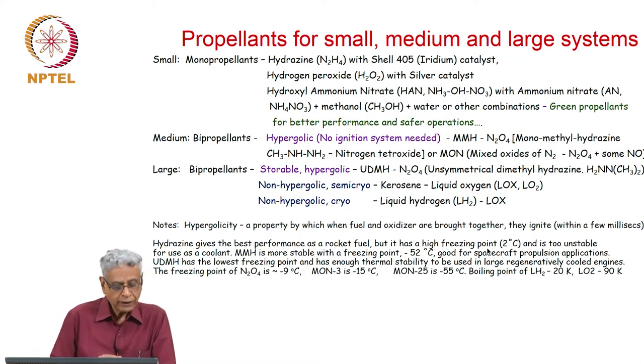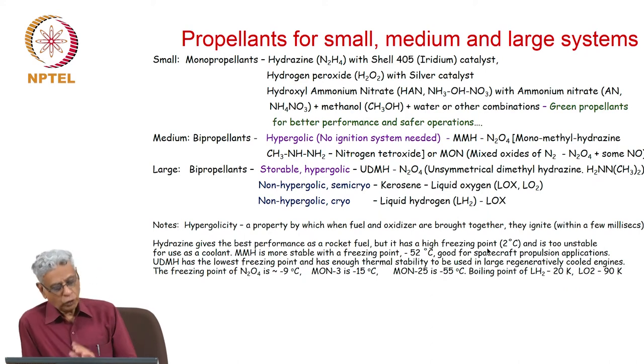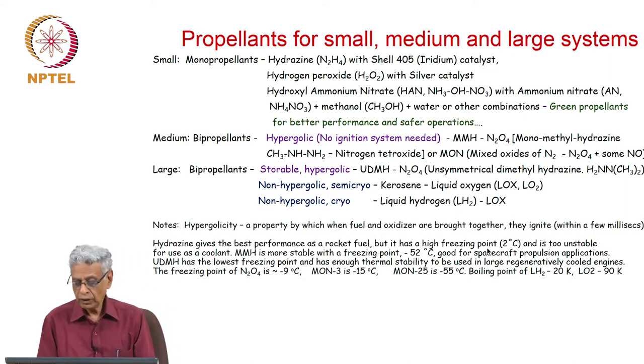Hydrazine gives the best performance as a rocket fuel but has a high freezing point and is too unstable for use as a coolant. As a monopropellant it works very well. MMH is more stable with a freezing point of minus 52 degrees centigrade, good for spacecraft propulsion. UDMH has the lowest freezing point and enough thermal stability to be used in large regeneratively cooled engines. The engine thrust chamber needs cooling, particularly the throat, so you need thermal stability. The freezing point of nitrogen tetroxide is minus 9 degrees, MON 3 minus 15. The boiling point of liquid hydrogen is 20 Kelvin and LOX is about 90 Kelvin.